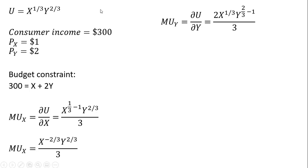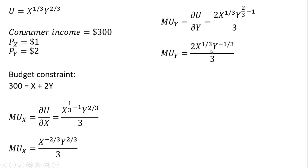We subtract 1 from the exponent on the Y term: 2/3 minus 1. Simplifying, we're left with Y raised to the minus 1/3 power. That is the marginal utility of good Y.